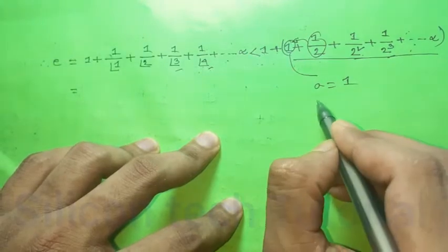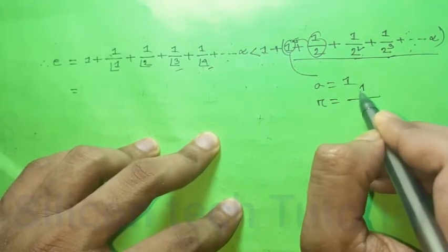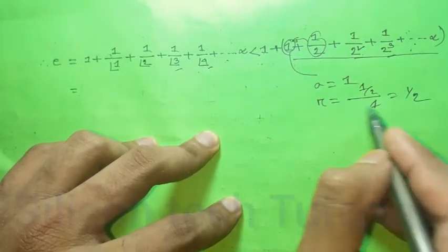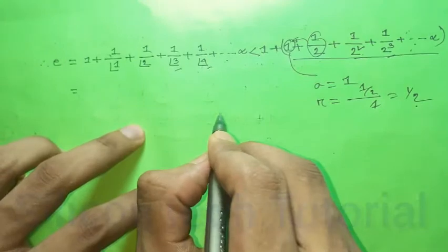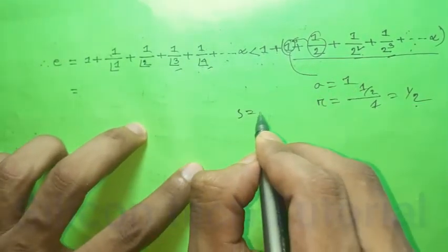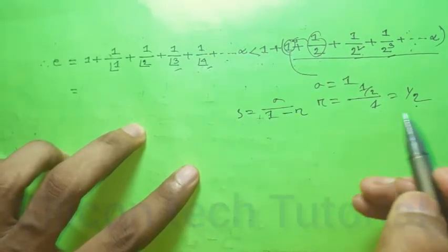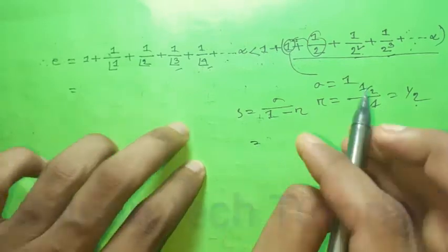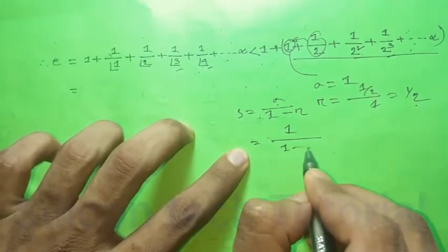To put the problem. r is equal to 1, 2 by 1, 2 by 2, 1 by 2 by 2. Now we have to put the problem: a by 1 minus r — 1 minus 2, 1 minus 1 by 2.